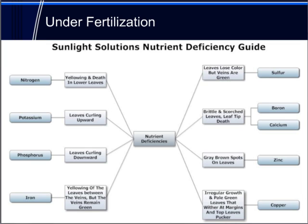When it comes to nutrient deficiencies, there are many causes and many symptoms. This chart helps show the most common symptoms and the nutrient deficiencies related to each. Keep in mind that just because a plant shows a certain symptom does not necessarily mean it has a nutrient deficiency, as each symptom can be attributed to multiple causes. For example, brittle and scorched leaves can also be caused by the light source being too close to plants and causing burning at the tips. However, if that possibility is ruled out, it could be a boron or calcium deficiency.